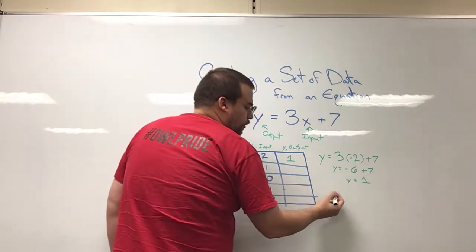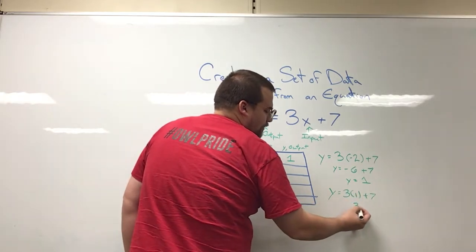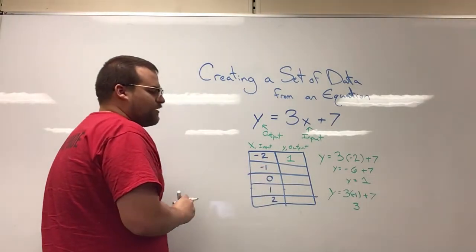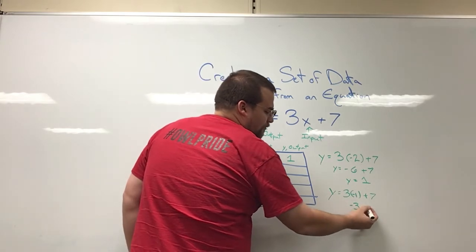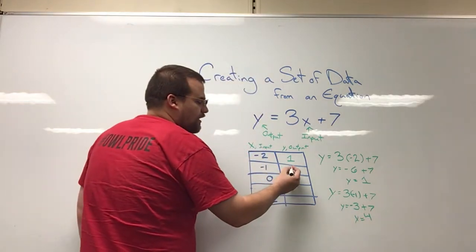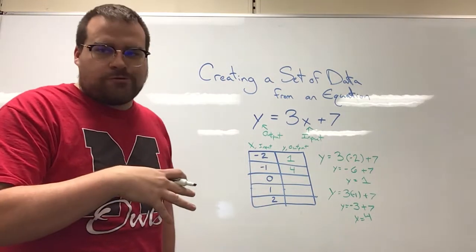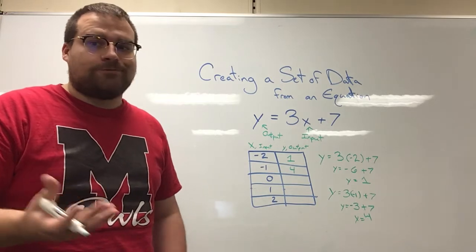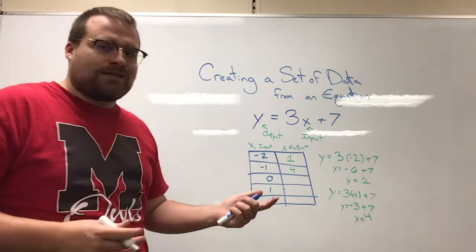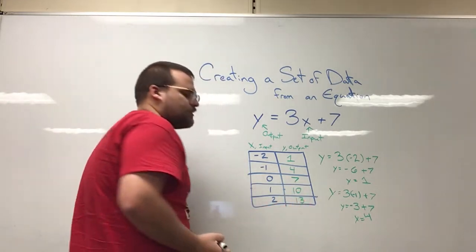Let's try some of the others. For negative 1: y equals 3 times negative 1 plus 7 — I just noticed I wrote it wrong, it's supposed to be negative 1. 3 times negative 1 is negative 3, and negative 3 plus 7 is 4. So for x equals negative 1, we got a y value of 4. I could go through all of these, but I'll save you that time: putting in 0 gets us 7, putting in 1 gets us 10, and putting in 2 gets us 13. You can check all those yourself by plugging in the input values.